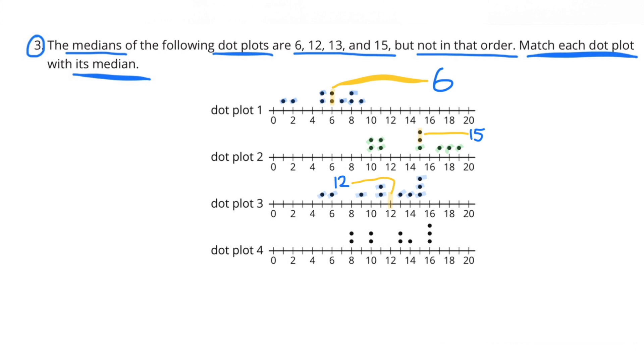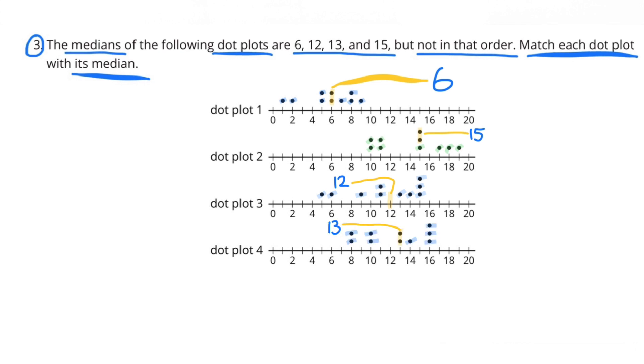Dot plot number four: there are four sets of data to the left of 13, I cross them out, and four sets of data to the right of 13, and I cross them out. The median for dot plot number four is 13.